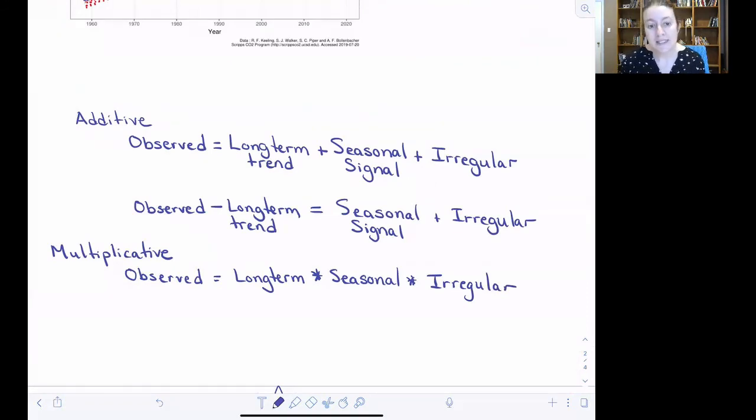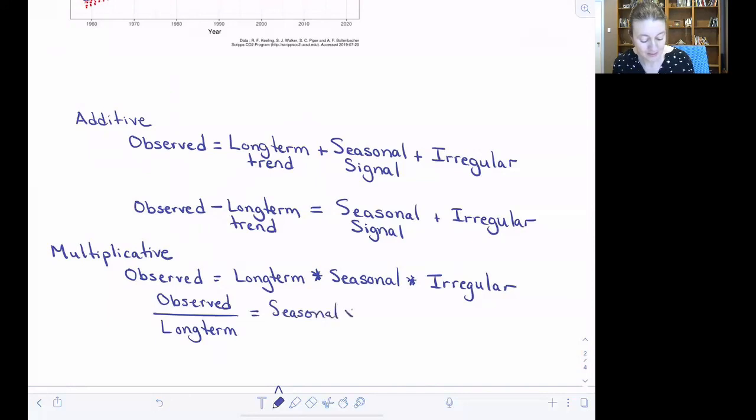Which means that if you want to isolate your long-term trend from your seasonal and irregular aspects of the data, you have to do some division instead. And so instead, what we would do is observed divided by the long-term, which then leaves this potentially interacting component between the seasonal and the irregular on the other side. And then from that, we would extract the seasonal signal to disentangle it from that irregular component.